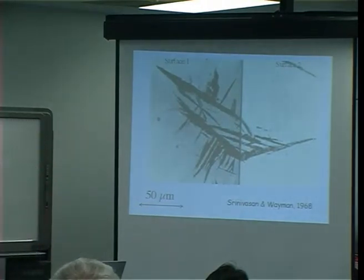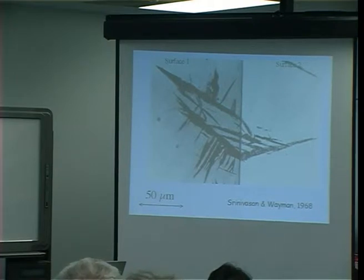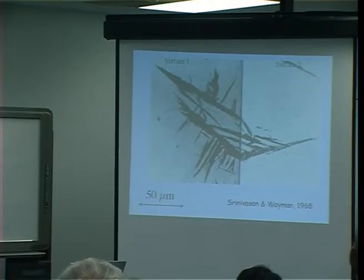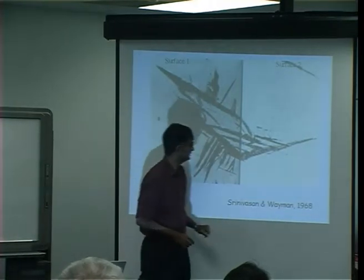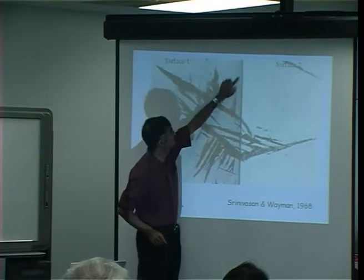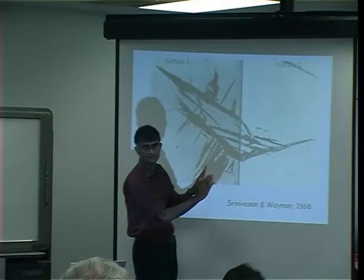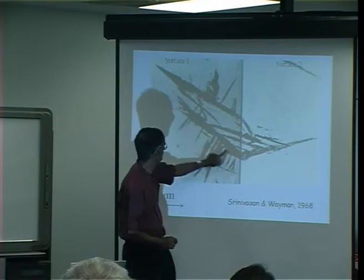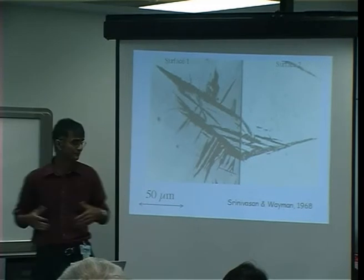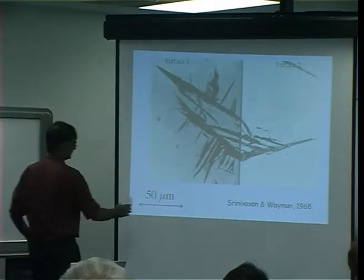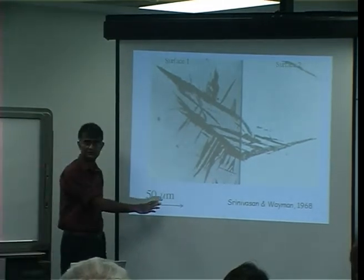When we look at shapes, we really ought to look at three-dimensional shapes, because when we look at 2D sections the morphology can be misleading. This micrograph was produced by Srinivasan and Weyman in 1968, showing an edge between two surfaces so you can see the plate continues across both — it truly is a plate shape. Notice the scale here is 50 micrometres.